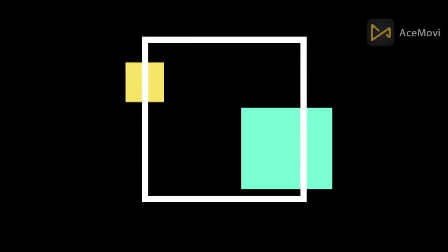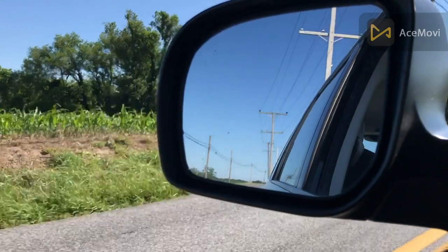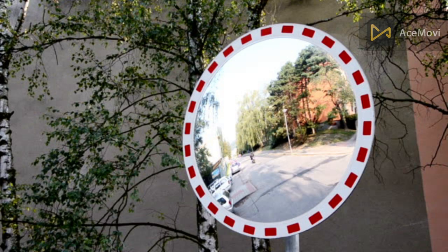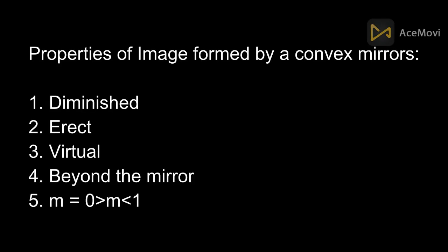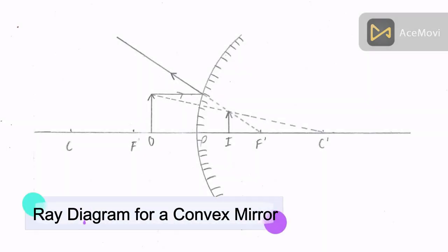Convex mirrors are curved outwards. We can see them in our daily life as rearview mirrors in vehicles, security mirrors, etc. These always give a diminished, erect, and virtual image beyond the mirror, and its magnification is always between 1 and 0.